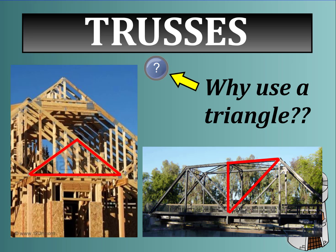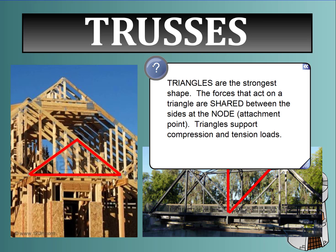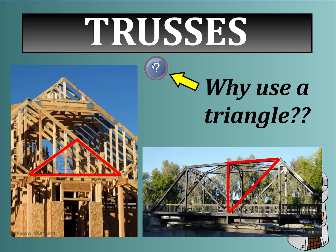So why use a triangle? Triangles are the strongest shape. The forces acting on a triangle are shared between the sides at the nodes or attachment points. Triangles support both compression and tension loads, making them the strongest structure overall because they resist compression and tension and distribute weight throughout the entire shape.